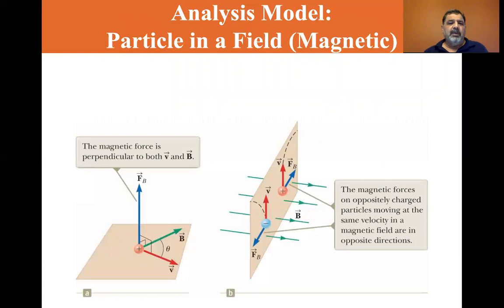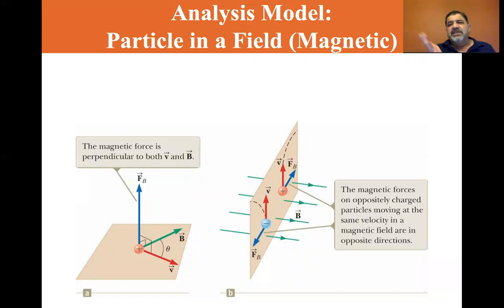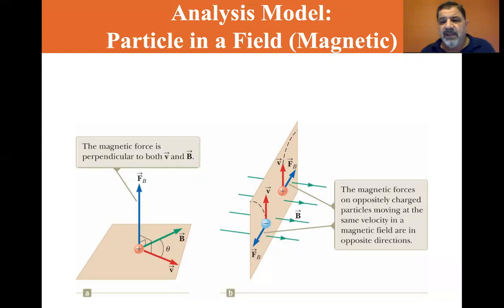Here we have the magnetic force. The red vector is the velocity and the green vector is the magnetic field, and you can see that the force is upward. The magnetic force is perpendicular to both V and B. The magnetic forces on oppositely charged particles moving at the same velocity in the same magnetic field are in opposite directions.